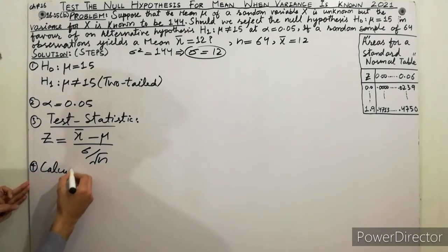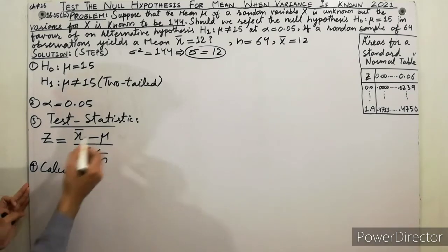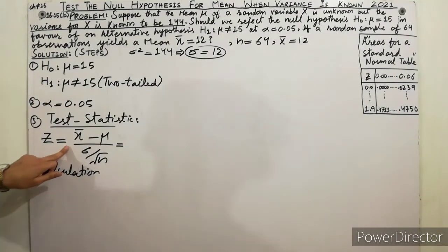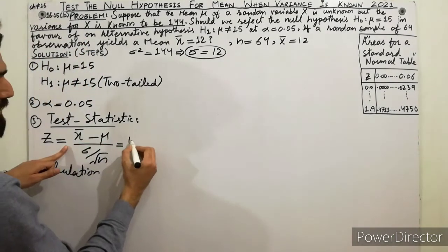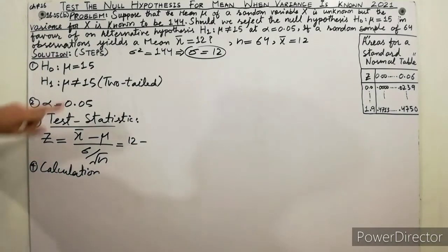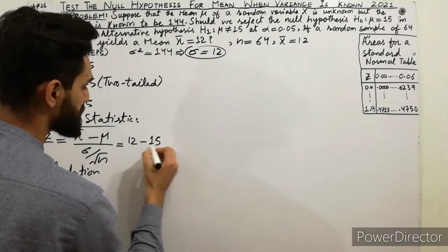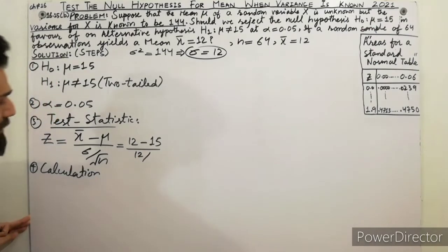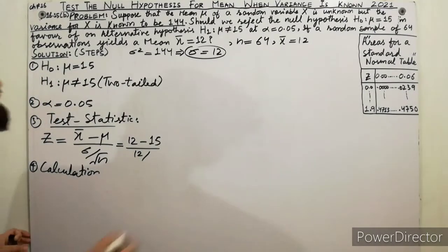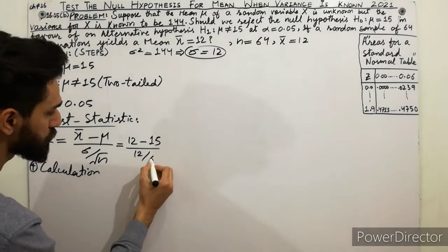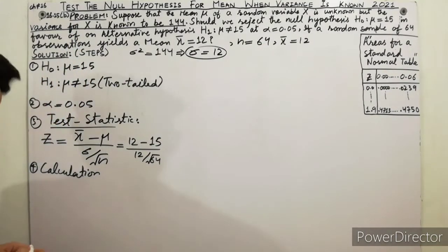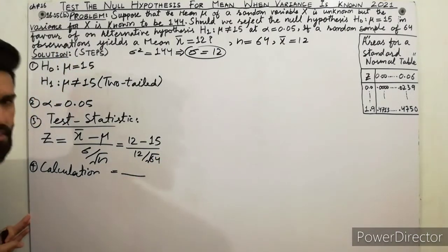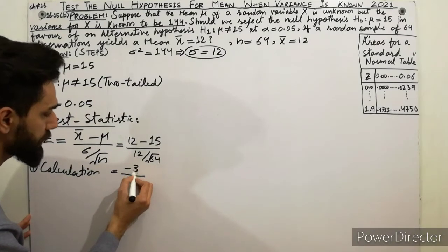Step four is the calculation. Putting in all the values: x-bar is 12, so we put 12 minus mu which is 15, divided by sigma which is 12, divided by the square root of n which is 64. Taking the square root of 64 gives 8. So we have 12 minus 15 in the numerator, which equals minus 3.